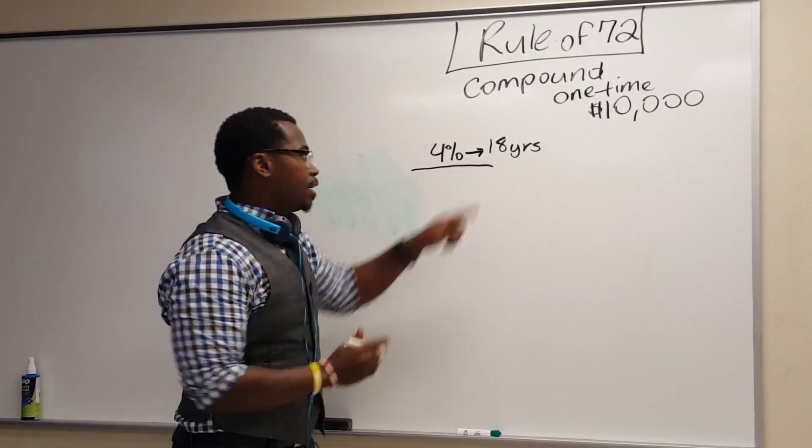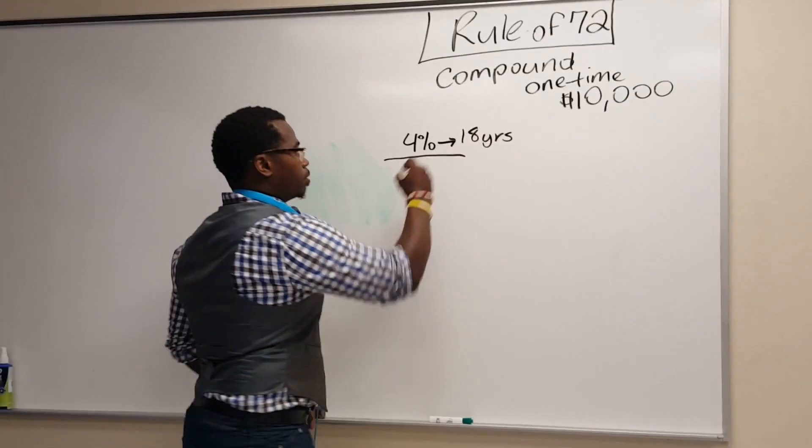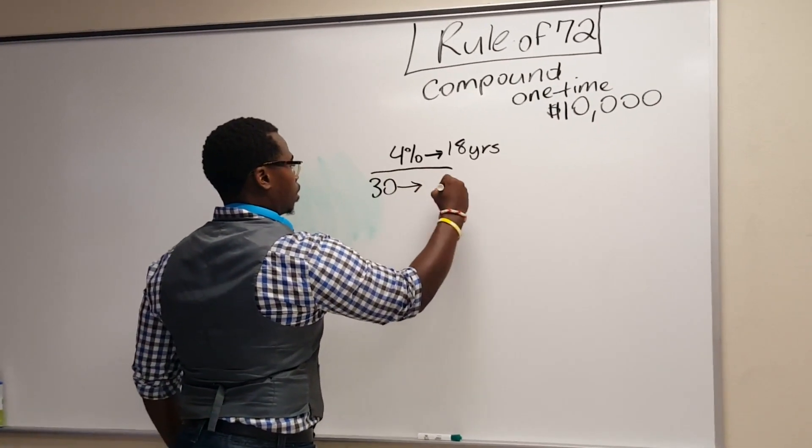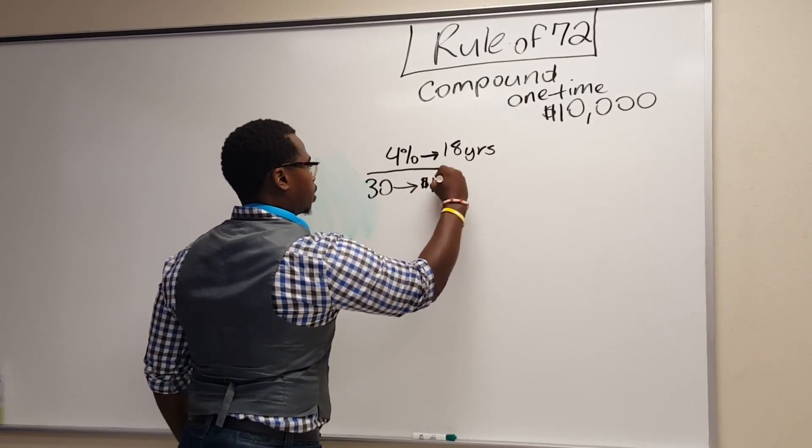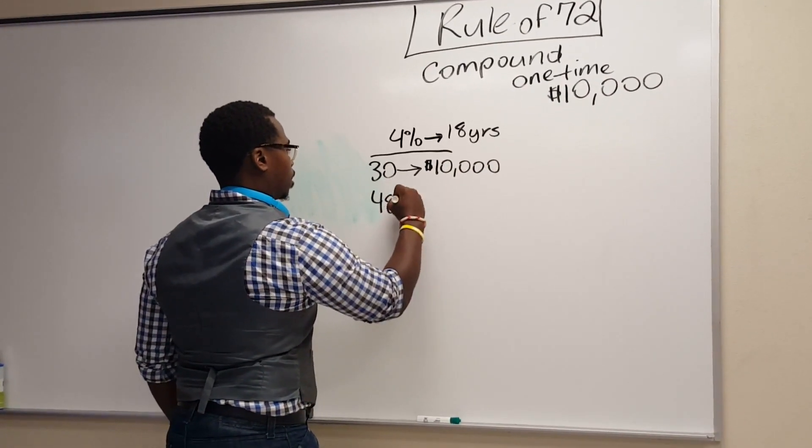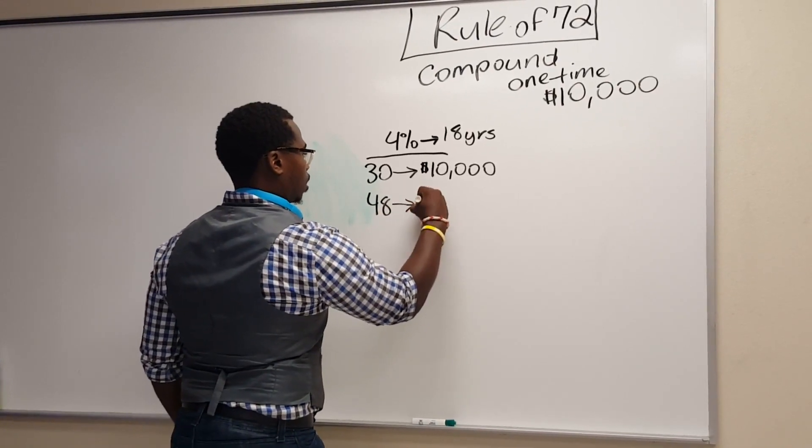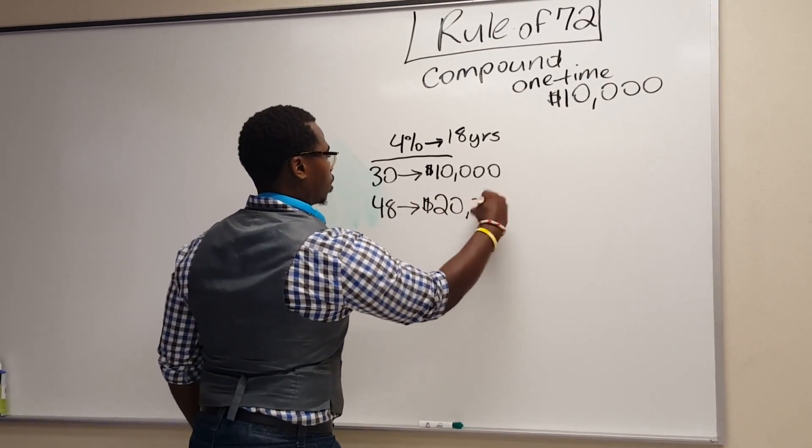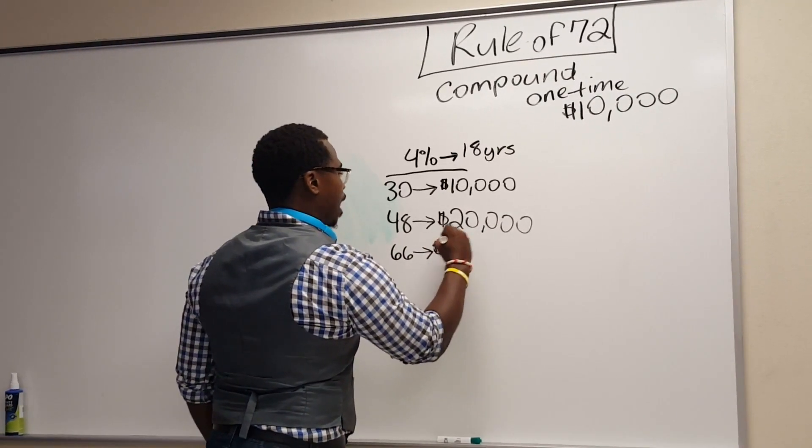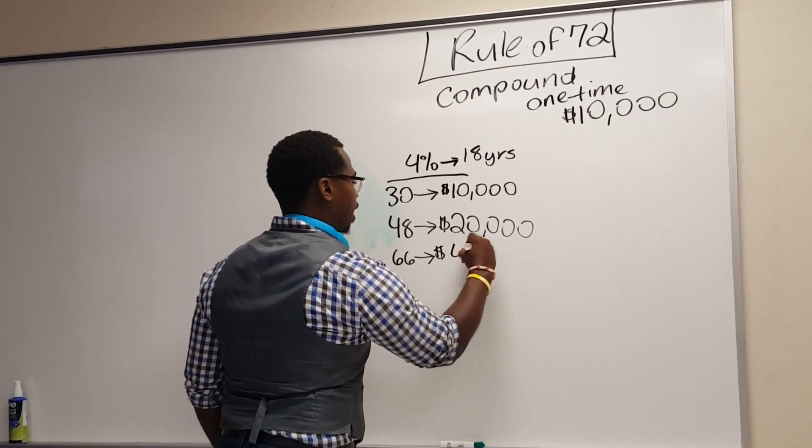So every 18 years, the $10,000 is going to double. So let's look at it from 30 years old and we start at $10,000. That means at 48, it's going to double to $20,000. And at 66, which we all know is retirement age, it's going to go to $40,000.